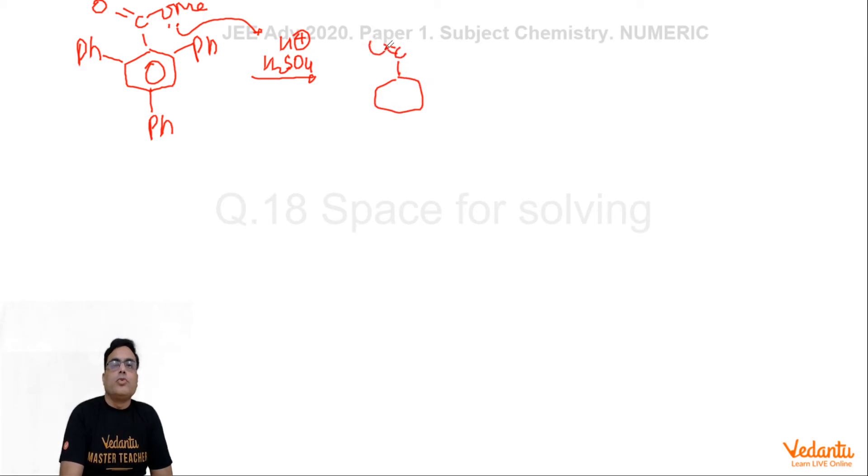So what you get is C double bond O OH plus Me, and there are three phenyl rings attached to this. Now this MeOH will go, and after removal of methanol you are left with this intermediate which they are saying is an ionic intermediate. This is the ionic intermediate.